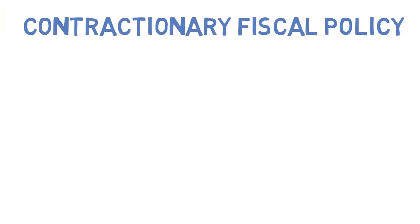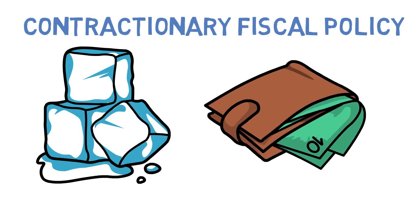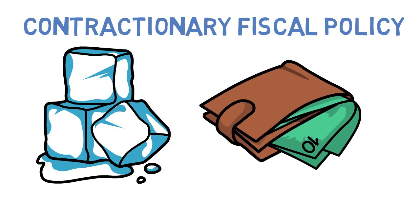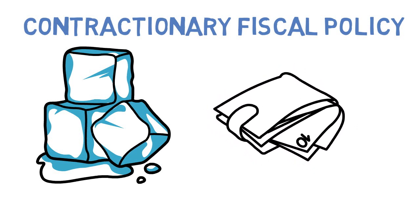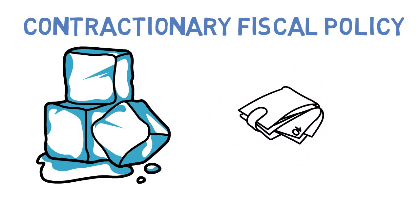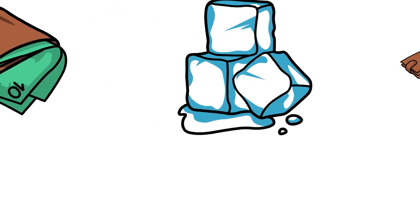Contractionary fiscal policy is when the government tries to contract the size of the economy, or cool it down if it's overheating. It would do this by reducing government spending and increasing the tax rate, which would reduce aggregate demand in the economy and stop it from overheating.